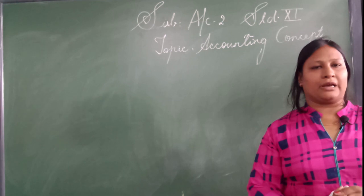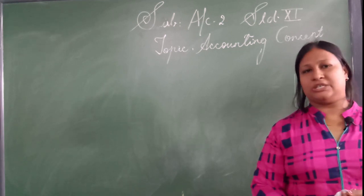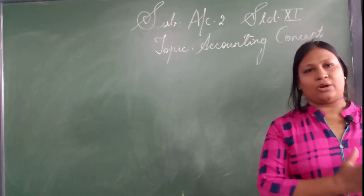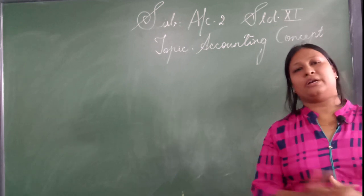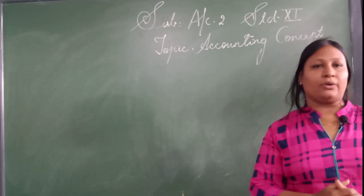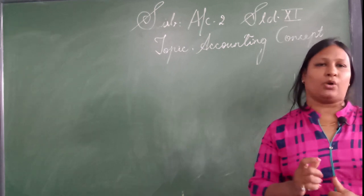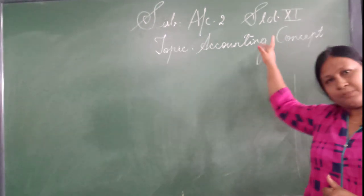Like we have trading account, profit and loss account, balance sheet. Some of the transactions are recorded in trading account while some are recorded in balance sheet. So how do an accountant get an idea about where to record what? That is based on these accounting concepts.